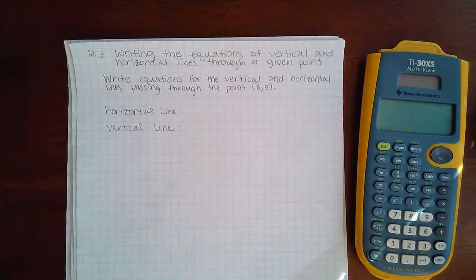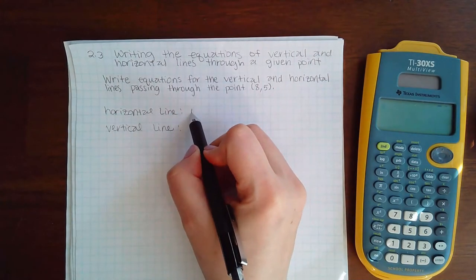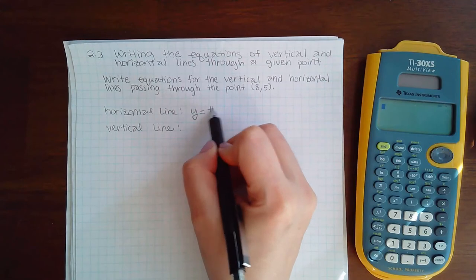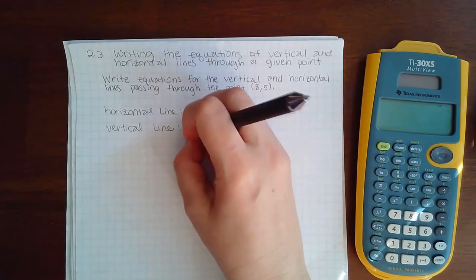So we need to know two different things about the horizontal lines. We know that horizontal lines are always in the form y equals a number, and vertical lines are always in the form of x equals a number.